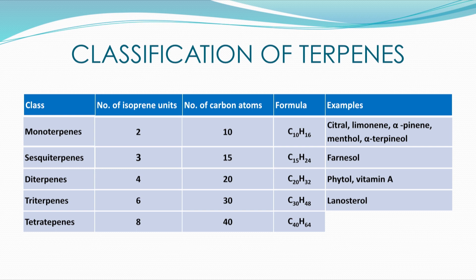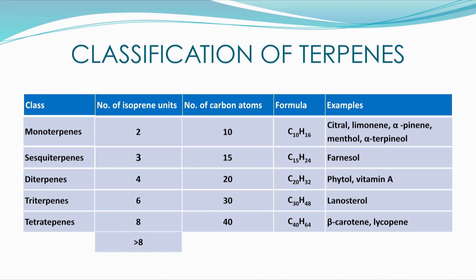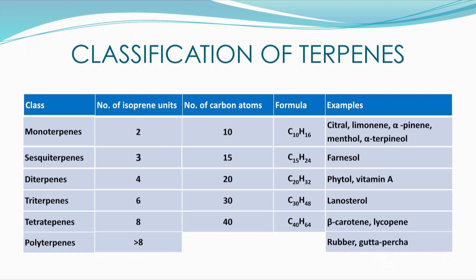Two very common terpenes, beta-carotene and lycopene, are examples of the tetraterpene class. Terpenes having more than 8 isoprene units are all referred to as polyterpenes. Examples of this class are rubber and gutta-percha. Other than these examples, there are many more terpenes belonging to each class.